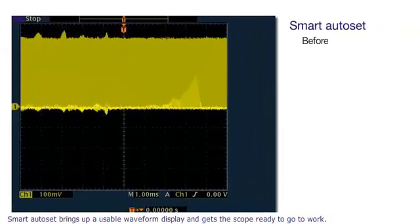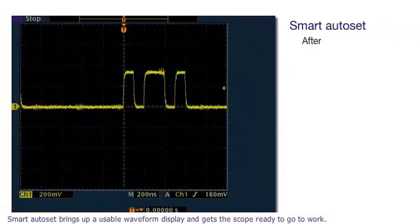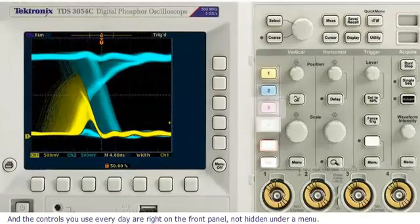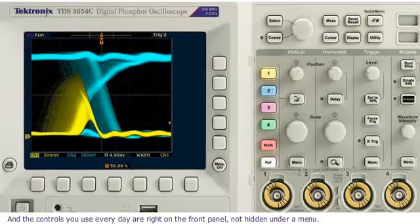Smart Auto Set brings up a usable waveform display and gets the scope ready to go to work. And the controls you use every day are right on the front panel, not hidden under a menu.